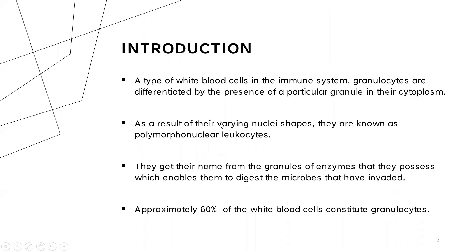We're going to look at granulocytes. These are types of white blood cells that are differentiated based on the granules that they have within their cytoplasms. As a result of the differences in the shape of their nucleus and also the presence of cytoplasm, it gives them a very special characteristic which enables them to fight infection in the body. They are called polymorphonuclear leukocytes because they can take different kinds of shapes within their nucleus.